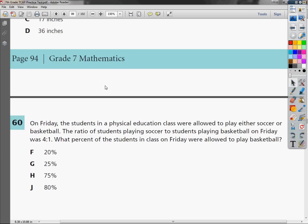This is a TCAP practice test for grade 7, math section, question number 60. On Friday, the students in a physical education class were allowed to play either soccer or basketball. They had two choices. The ratio of students playing soccer to students playing basketball on Friday was 4 to 1. What percent of the students in class on Friday were allowed to play basketball?